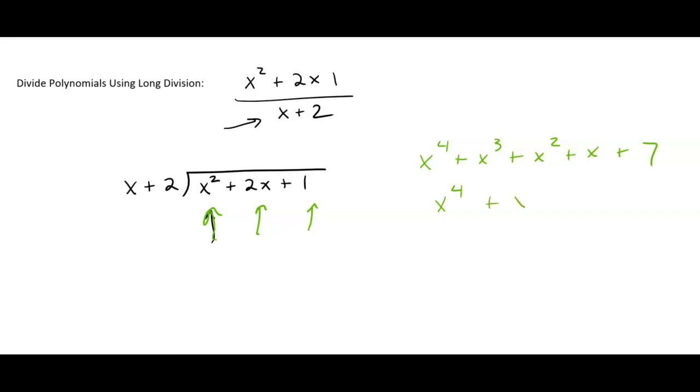plus x², you'd have to write it as x⁴ plus 0x³ plus x². You'd have to have that for a placeholder, and I know it looks weird because it's